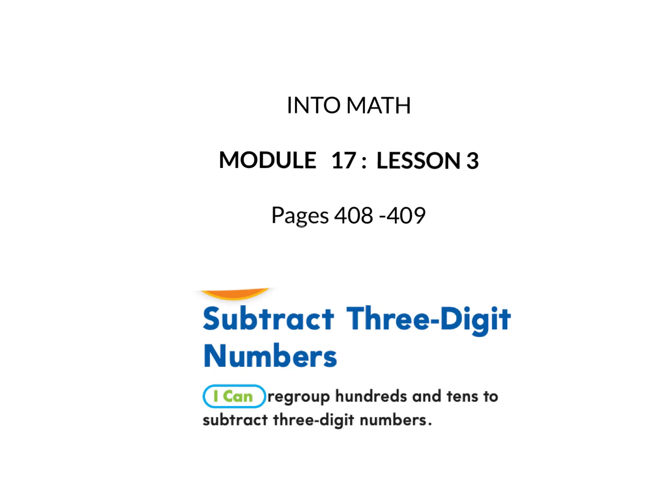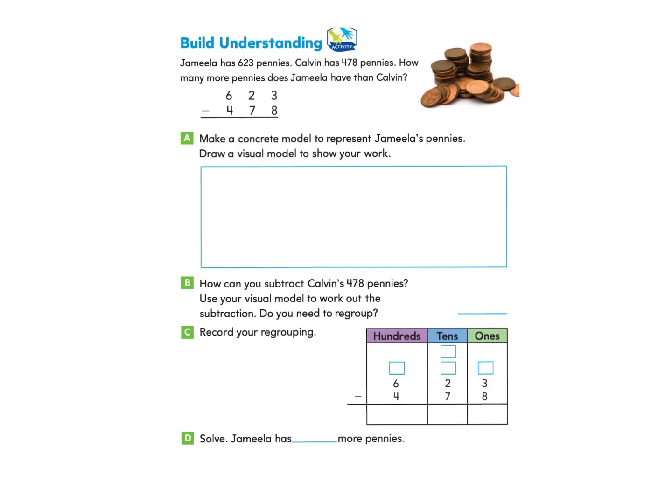This is Into Math, Module 17, Lesson 3. The I Can Statement is: I can regroup hundreds and tens to subtract three-digit numbers. We will be working on pages 408 to 409. Please gather your workbook and a pencil and turn to page 408. We will begin under Build Understanding.